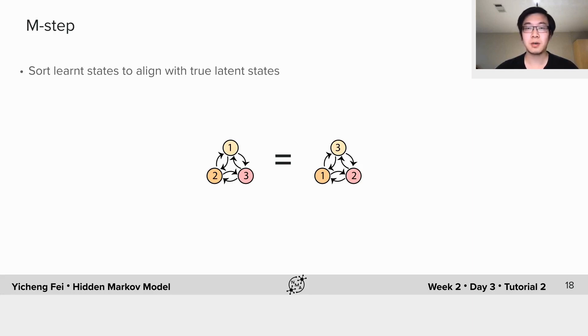So after learning, although we've recovered all the parameters, the order of the latent states may not match the true order, and we need to additionally sort the latent states to match the true ones for visualization. This can be done by comparing the values of latent firing rates and the true firing rates.